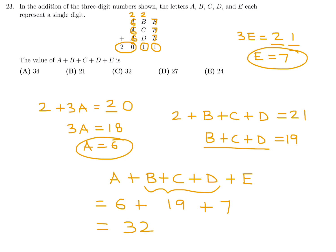A I know is 6 from here. B plus C plus D I know is 19 from here. And then E I got at the very beginning is 7. There you go. So that is 32. Number 23, the answer is 32, and that would be choice C.